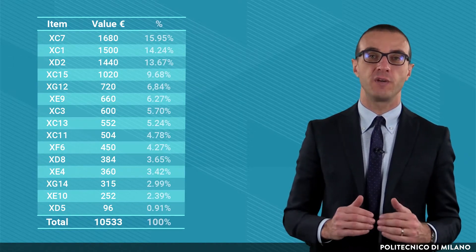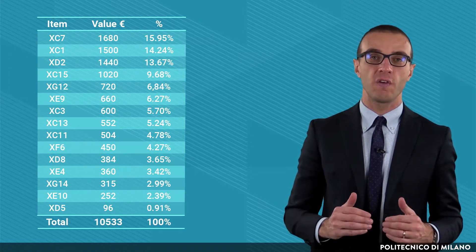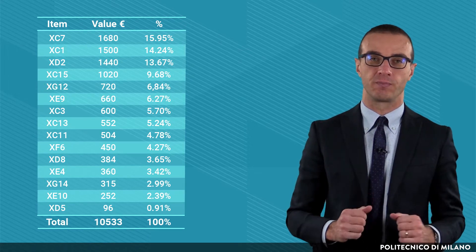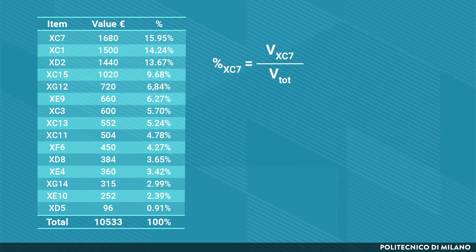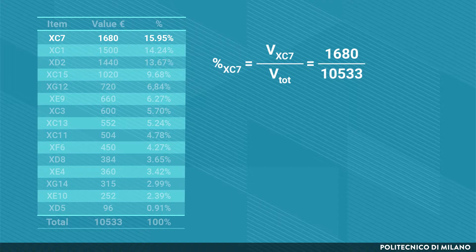Third, if we divide the value of the inventory of each item by the total value, we find the incidence of each item on the total value. For example, the incidence for item XC7 is found as the ratio between 1,680 — the value of the stock of item XC7 — and 10,533, the total value of the items on hand.